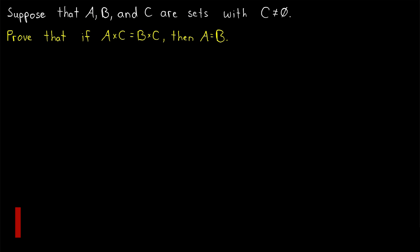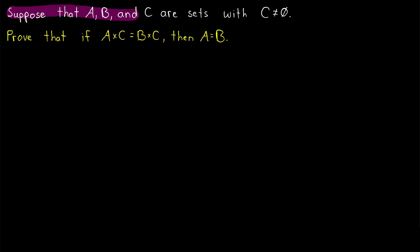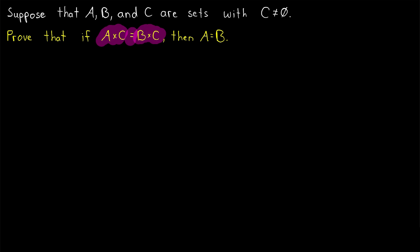Today we're going to prove what could be called the cancellation law for Cartesian products. Suppose that A, B, and C are sets with C being non-empty. We'll prove that if the Cartesian product A cross C equals the Cartesian product B cross C, then A equals B. In other words, we can cancel the C on both sides.